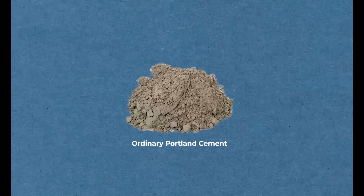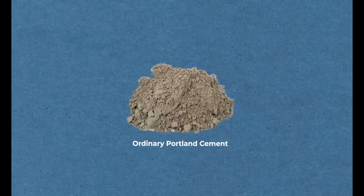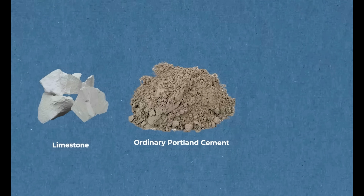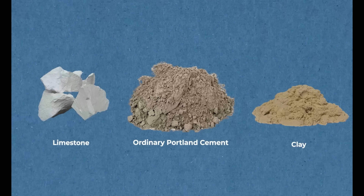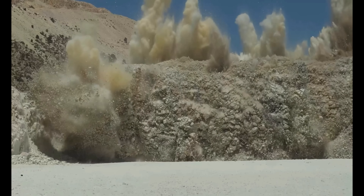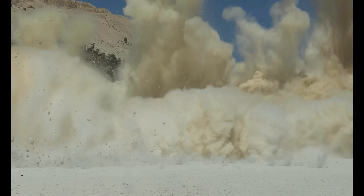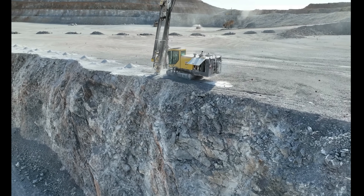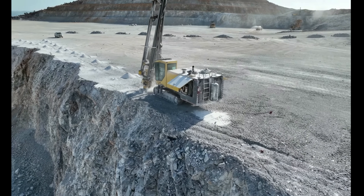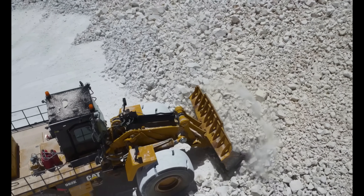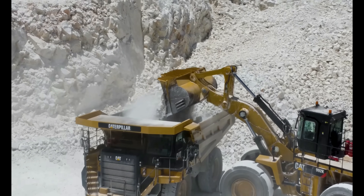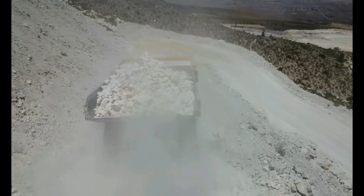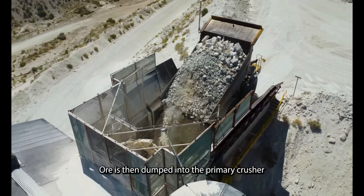The primary raw materials used in cement production are limestone and clay. They are typically obtained from quarries by blasting or using heavy machinery to extract them from the earth's crust. The extracted materials are transported to the crushing plant, where they are crushed into smaller pieces.